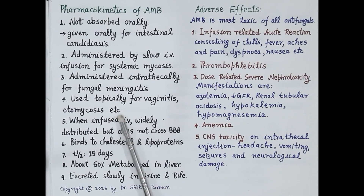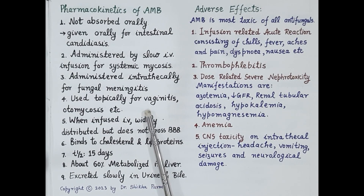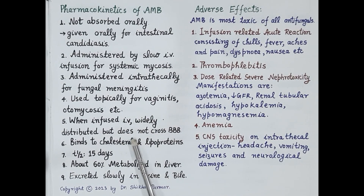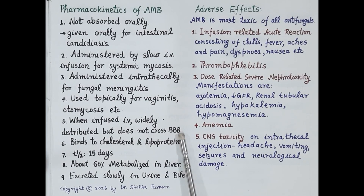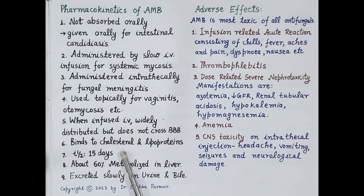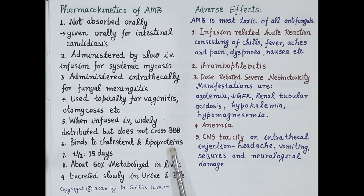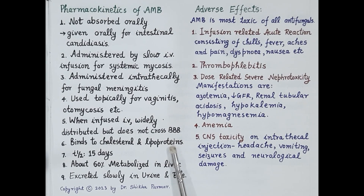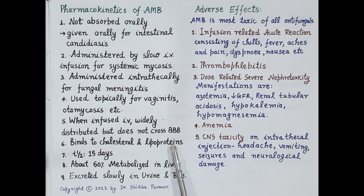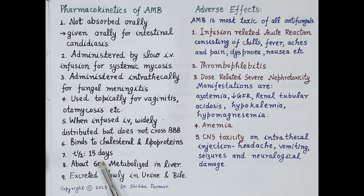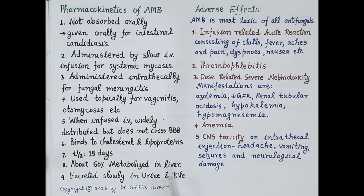Amphotericin B is widely distributed in the body and does not cross the blood-brain barrier. It binds to cholesterol in tissues and to lipoproteins in plasma, causing it to stay in the body for a long period. It has a half-life of 15 days; about 60% is metabolized in the liver and it is excreted slowly in the urine.